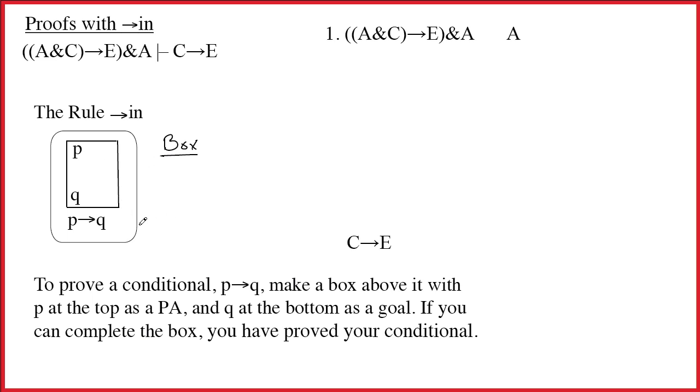Whenever you're trying to prove a conditional, a line that has an arrow as its main connective, you have to make a box. When you're trying to prove an arrow, you're not trying to prove that P is true and that Q is true. You're trying to prove that there's a relationship between them such that P leads to Q.